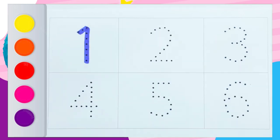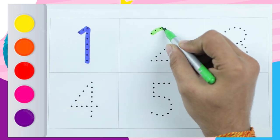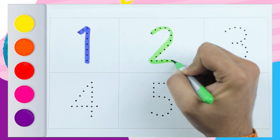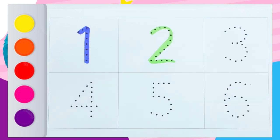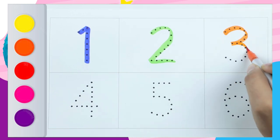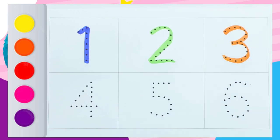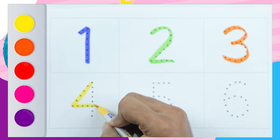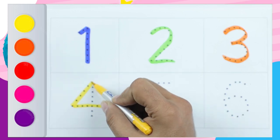Number one. Number two with green color — number two. Number three, it's orange color. Number four, it's yellow color.